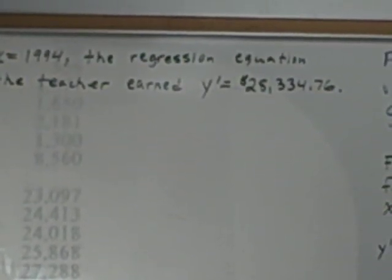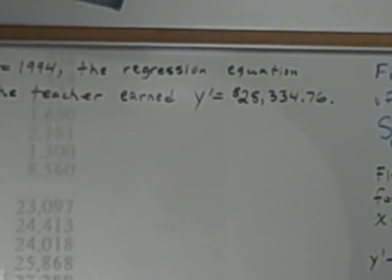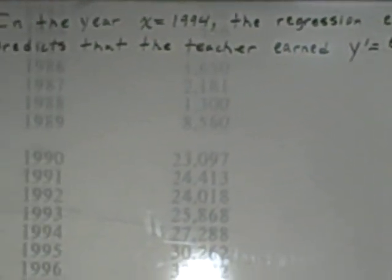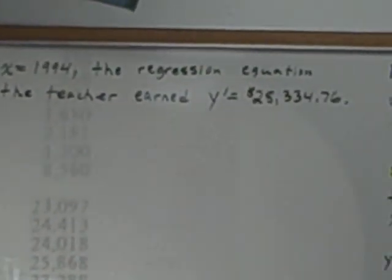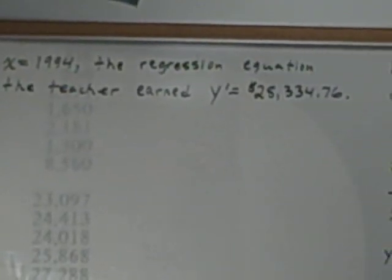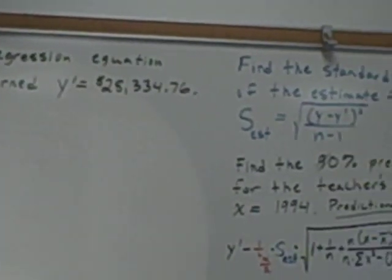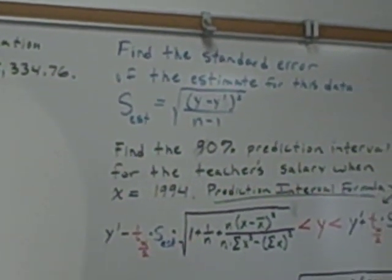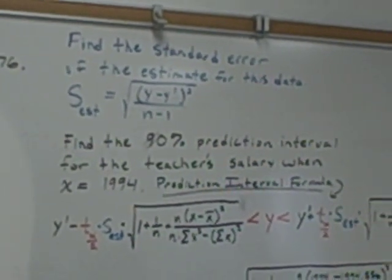Now, we know that may not be accurate, and depending on what data we use, we may get a different prediction. So instead of having a point prediction, in this video I want to show how to find the standard error of the estimate using the blue formula, and also how to find a 90% prediction interval.